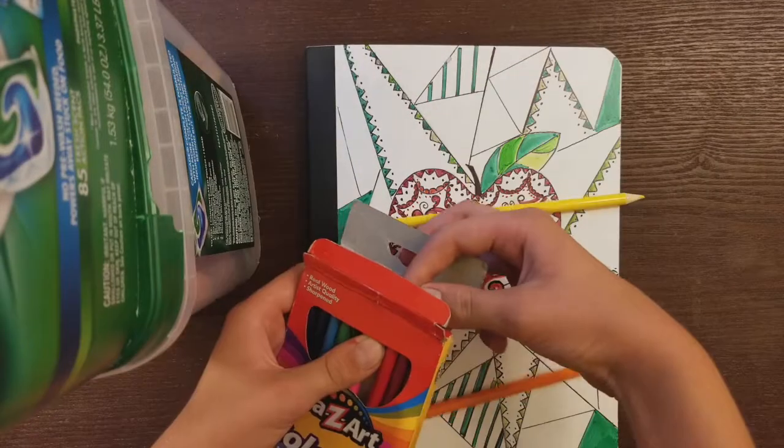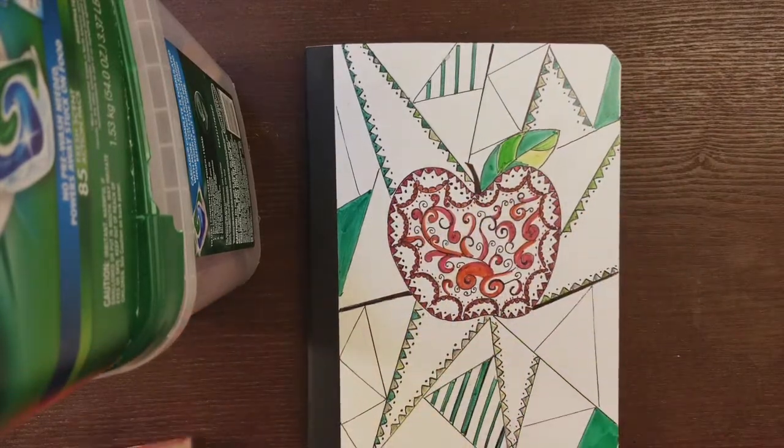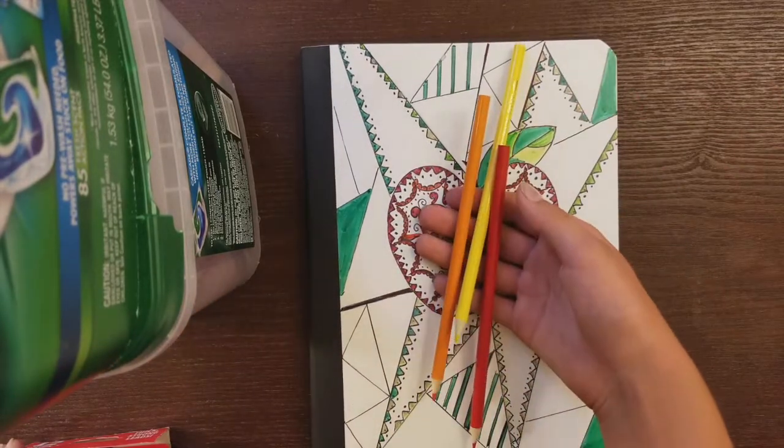Take some colored pencils with the colors orange, red, and yellow. Color the inside of the apple to make one side lighter than the other.